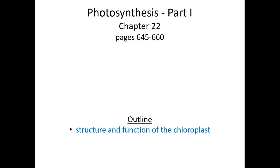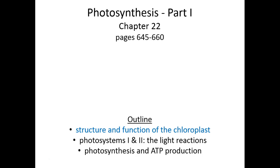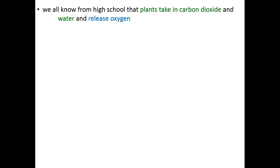In this first half of photosynthesis, we will talk about the structure and function of the site of photosynthesis, which is the chloroplast organelle found in all photosynthetic plant cells. In the second chunk, we'll talk about photosystem I and photosystem II — the sites of the light reactions, where water is split into oxygen and energy. That will lead us into the first phases of photosynthesis and ATP production. We'll also take a detour and talk about photosynthesis without oxygen in more primitive cells.